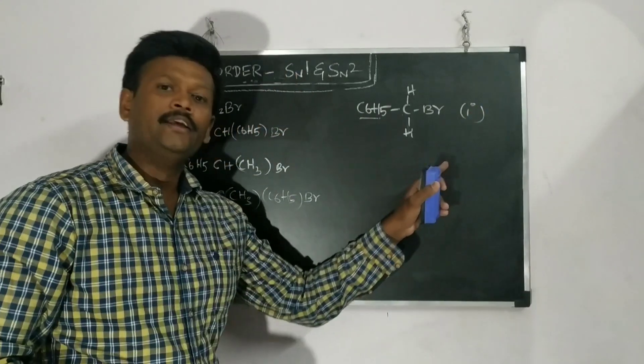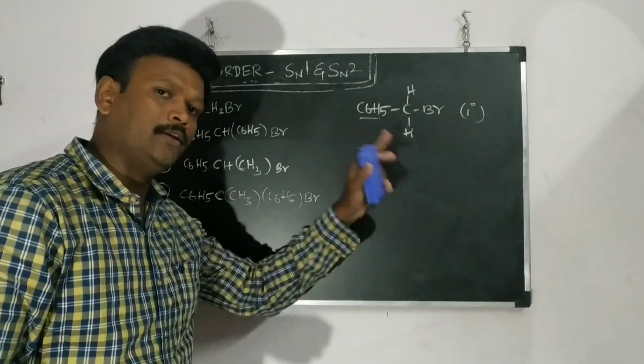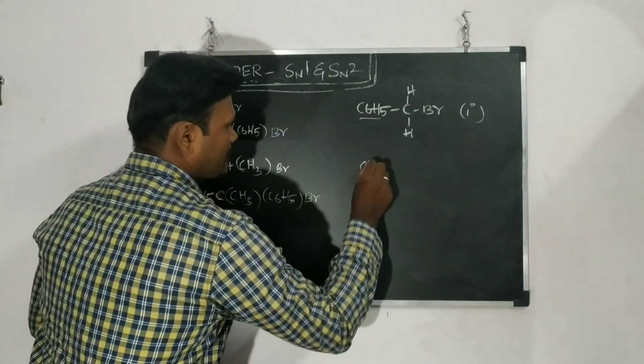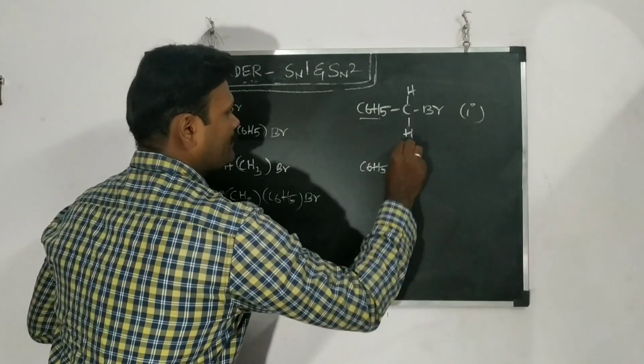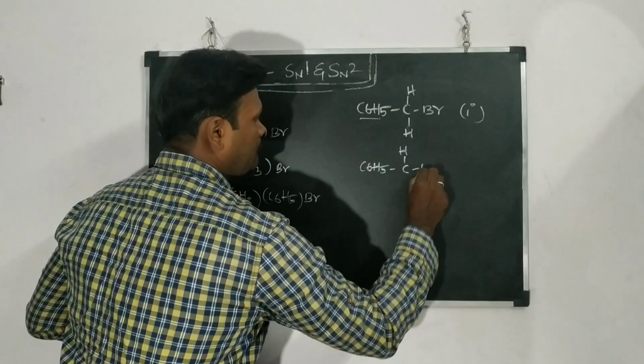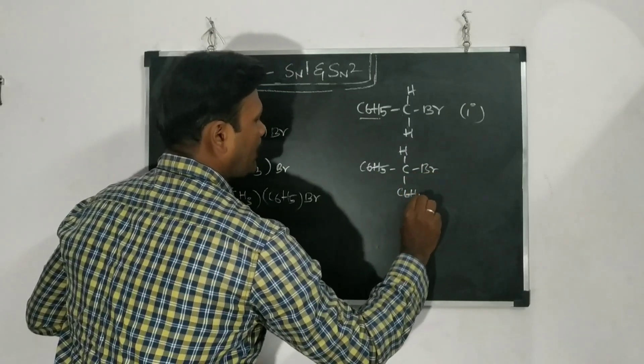If you don't know about this, you must watch my previous video. Then you will get an idea. And then the second component, what is that? C6H5 is there. And C, one side is H, another side is Br, another side is C6H5.